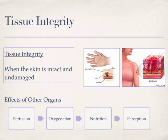An important concept to understand with tissue integrity is that our skin is the largest organ of our body and is affected by multiple systems. You really have to look at the skin as a great assessment tool for other findings going on with your patient. You have to think about perfusion, because if you don't have good perfusion, that affects oxygenation, which affects tissue healing. If you don't have good nutrition, that affects healing as well. Diabetes or malnutrition also have an effect on your skin. Tissue integrity also affects perception — like pain perception or alteration in sensation.